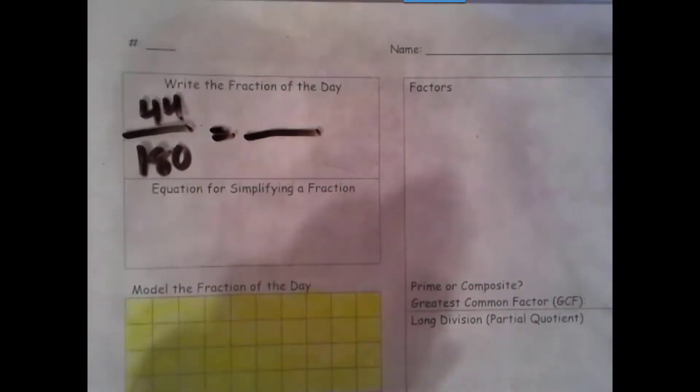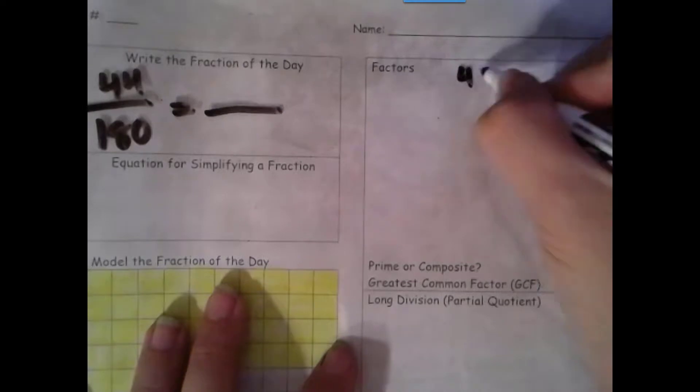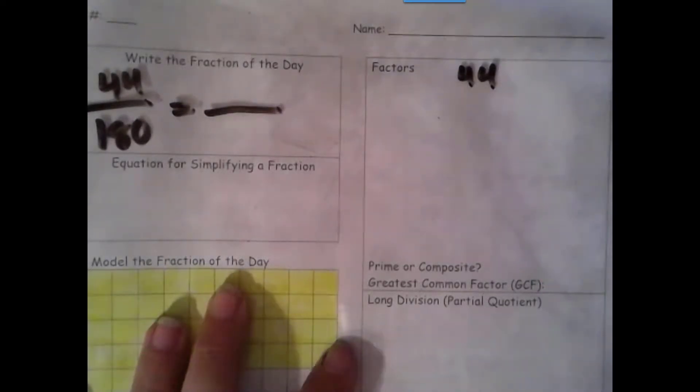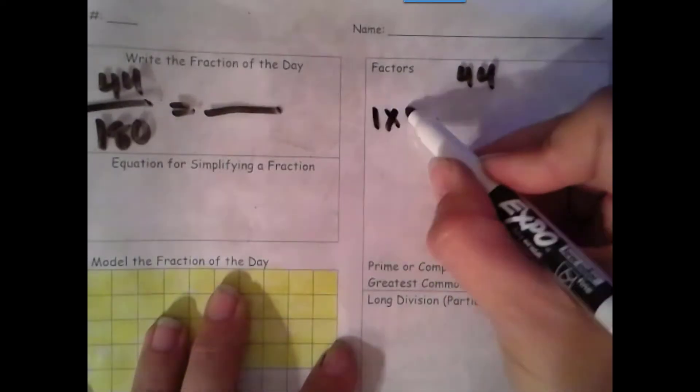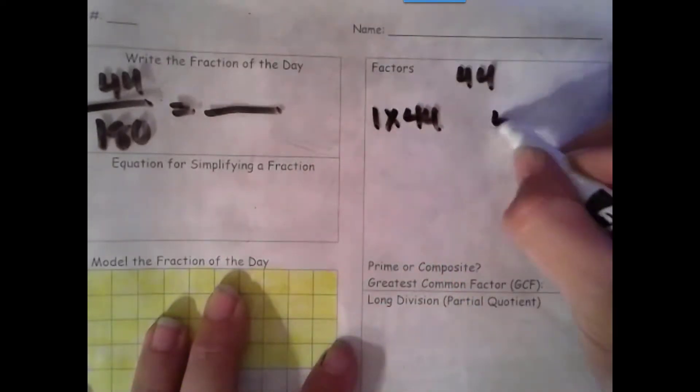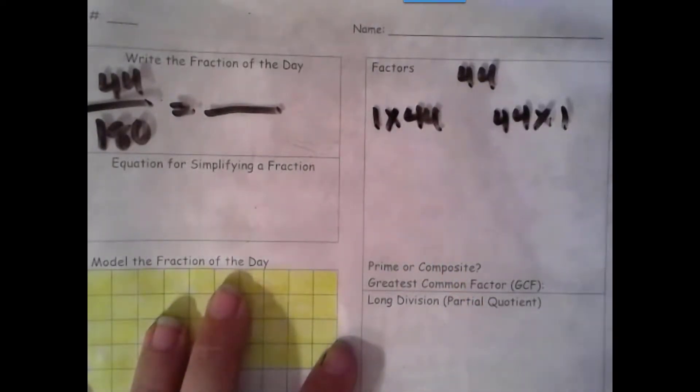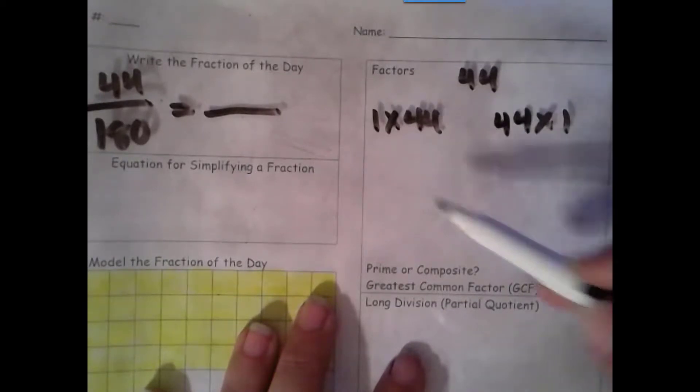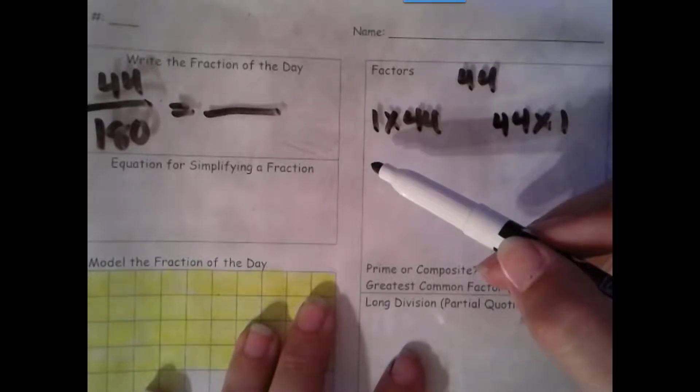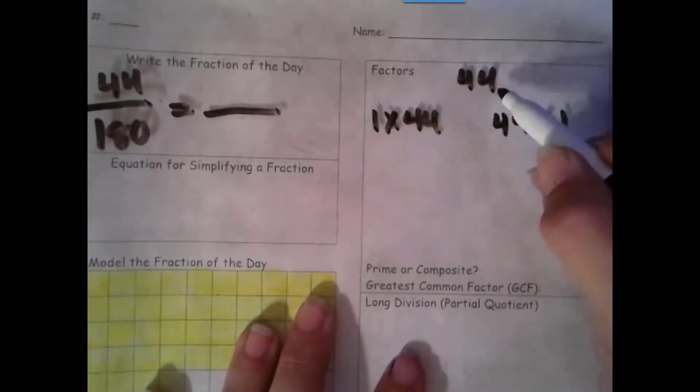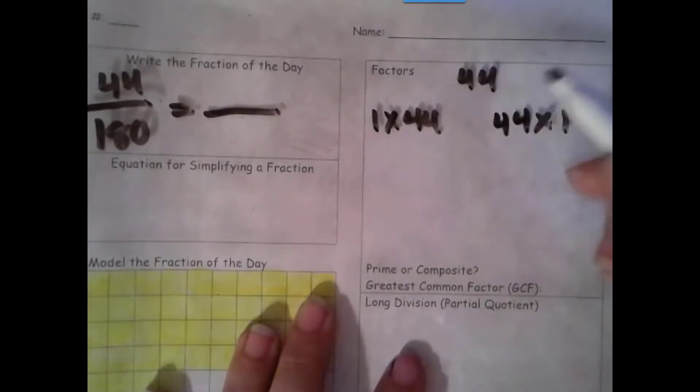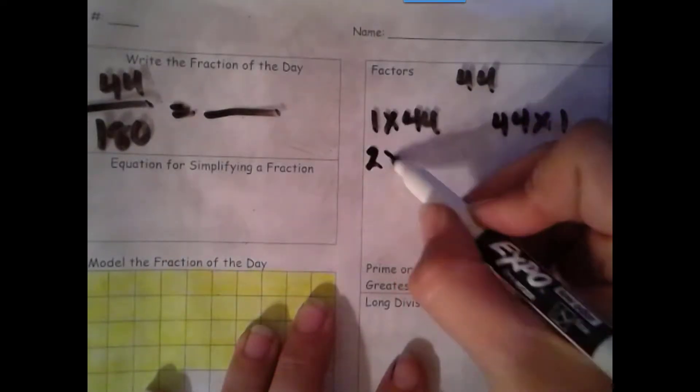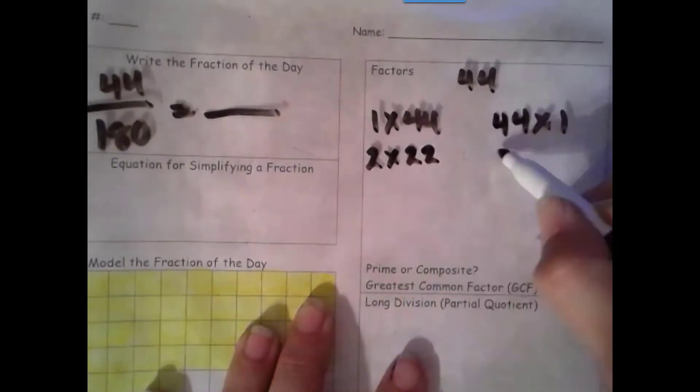Let's go ahead and find the factors of our numerator. Two factors we always know are 1 and the number itself. Using the commutative property of multiplication, we can also do 44 times 1. Now we're going to use our divisibility rules and check for other factors in an orderly fashion. After 1, we're going to go with 2 because we're going to go in order. The rule for 2 is that it ends in an even number. 4 is even, so 2 is a factor. 2 times 22, 22 times 2.